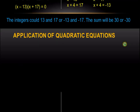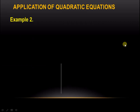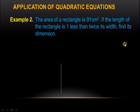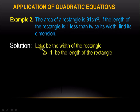Let's have our next example. The area of a rectangle is 91 square centimeters. If the length of the rectangle is 1 less than twice its width, find its dimensions. Let us say that x is the width of the rectangle. Therefore, the length — which is stated as 1 less than twice its width — will be 2x minus 1.